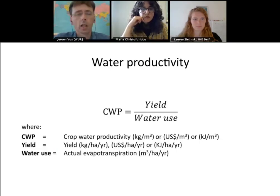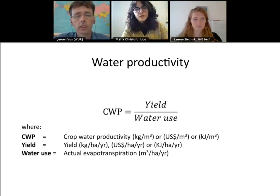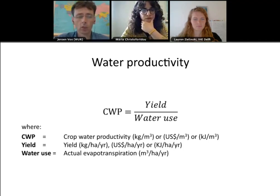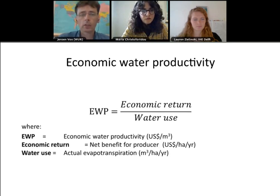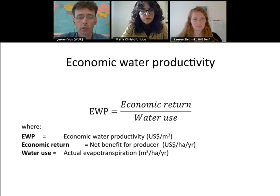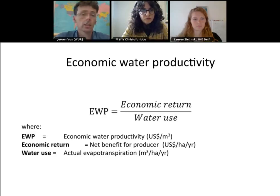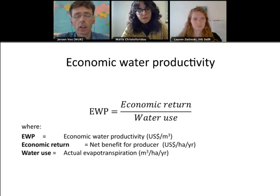Returning to the core of water productivity: crop water productivity is yield divided by water use. That yield can be expressed in kilograms per hectare per year, US dollars per hectare per year, or kilojoules per hectare per year — and that matters, because it relates to the goal when striving for higher water productivity. Economic water productivity concentrates on US dollars per hectare — how much economic return is made per cubic meter of water. But social water productivity asks: who benefits from those economic returns? Is it a large investment company or the workers in the field?